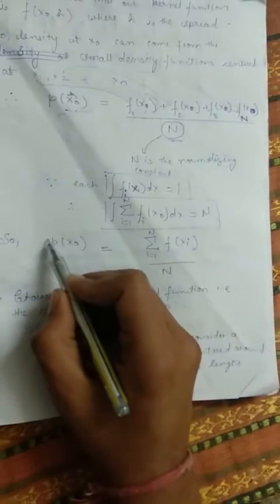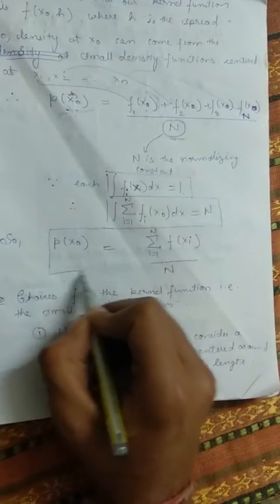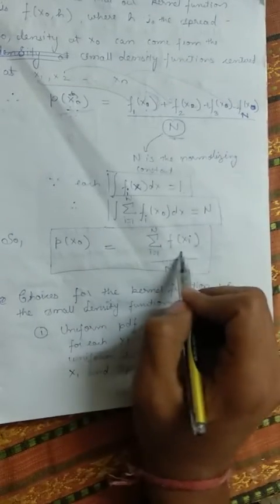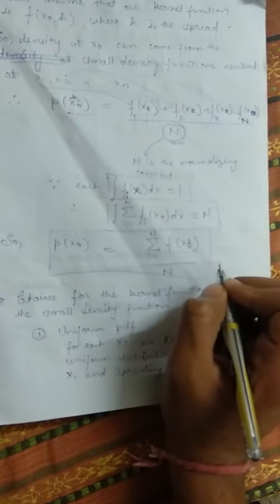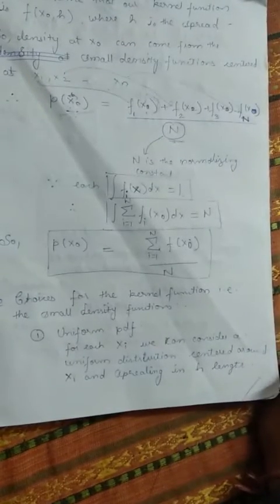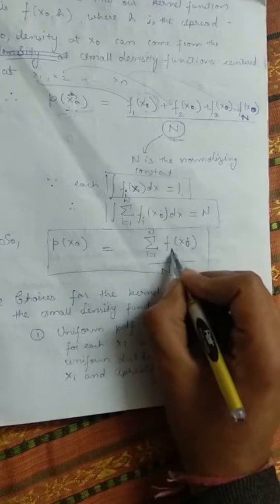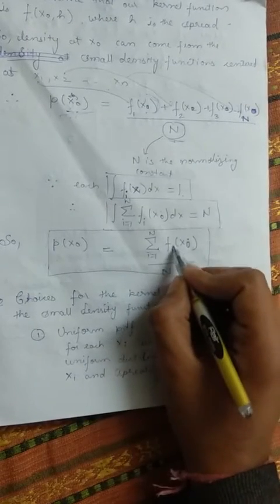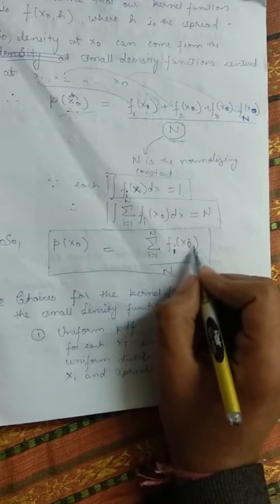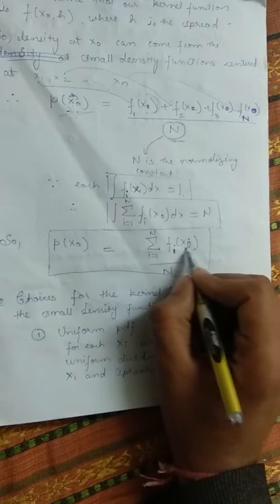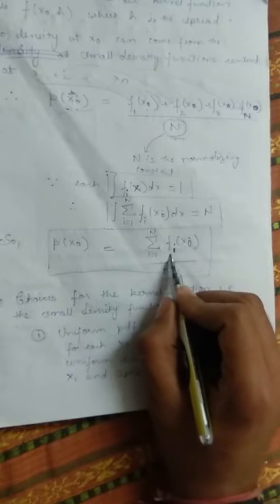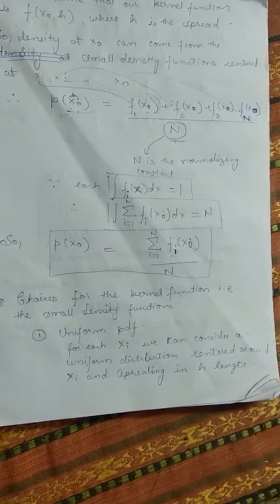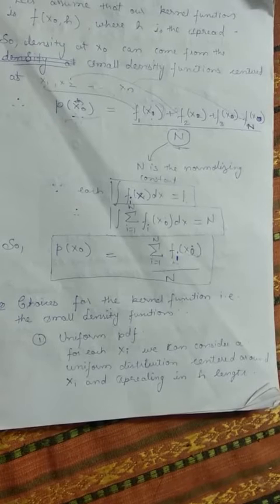Mathematically, the probability density at a new point p(x0) is represented by this formula. Note: the input to each function fi is x0, and these functions are the kernel probability density functions approximated at each of the data points.